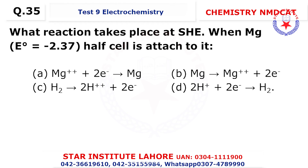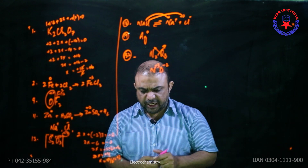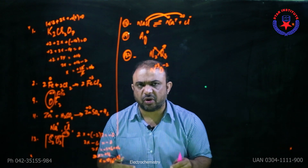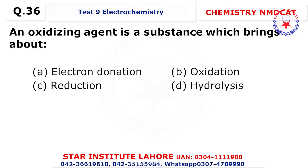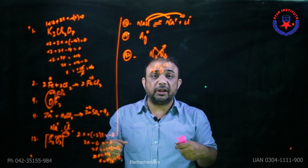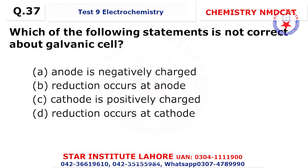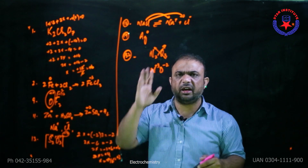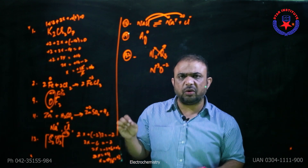Question 35: what reaction takes place when Mg has an E° value of minus 2.73 and a half-cell is attached to it? Simply, if the value is negative, hydrogen in comparison will gain electrons. And if the value is positive, hydrogen loses electrons. Question 36: an oxidizing agent is a substance which brings about oxidation by oxidizing other substances and gets itself reduced. Question 37: which statement is not correct about the galvanic cell — 'reduction occurs at the anode' is wrong, because the rule is oxidation always happens at the anode and reduction always happens at the cathode.